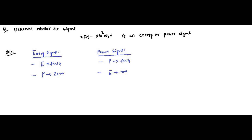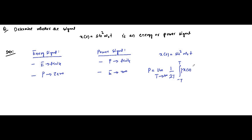The signal is Xt = sin²(ω₀t). First, let us check the power. The expression of power is: P = limit T→∞ of (1/2T) × integral from -T to T of Xt² dt. Before we proceed, let us simplify the expression Xt² by substituting Xt = sin²(ω₀t).